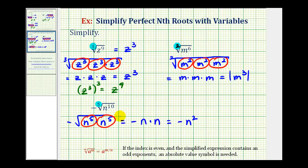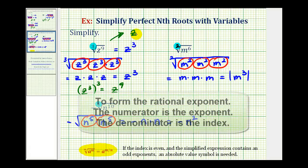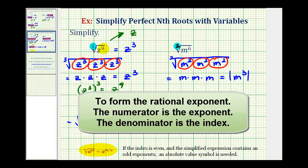I do want to mention one more thing. If you've already learned how to convert a radical to a rational exponent using this definition, it does simplify this process as long as you know that the radicand is a perfect nth root. For example, looking at the first example again, we could write this as z raised to the power of nine divided by three, and of course nine divided by three is just three, giving us z to the third. It's obviously a much shorter way to simplify this.